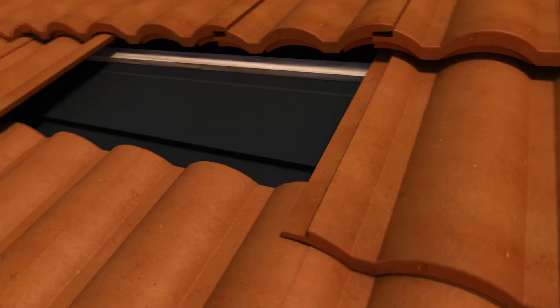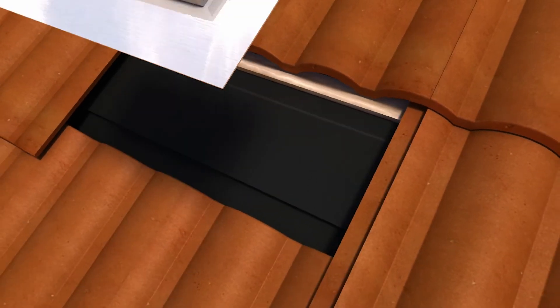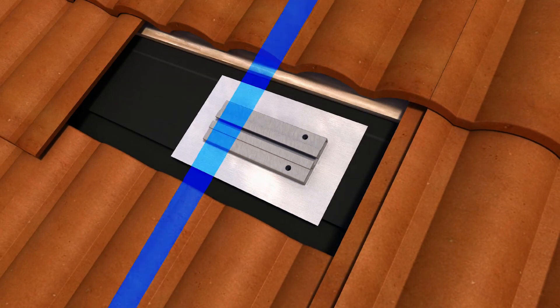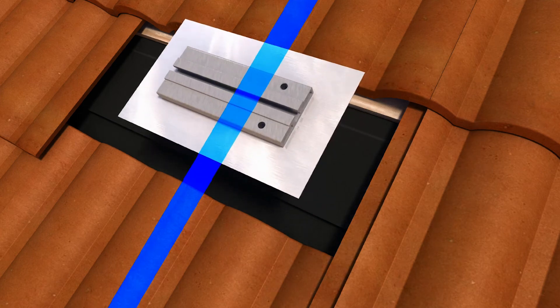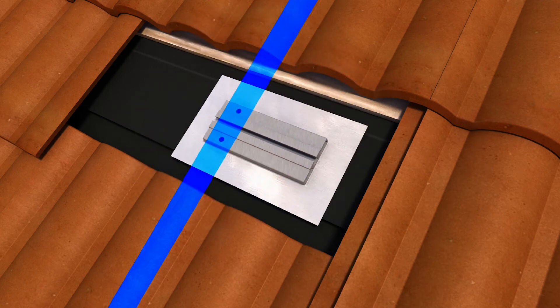Simply remove the tile or tiles where you wish to install the mount. The mount can be oriented either to the left or to the right of the rafter for maximum versatility.